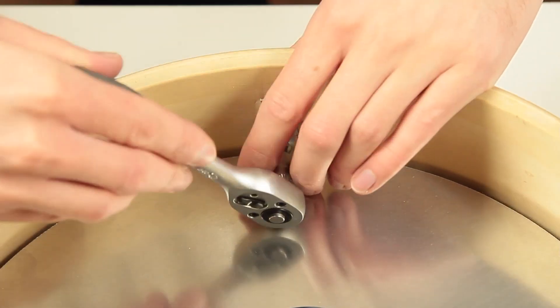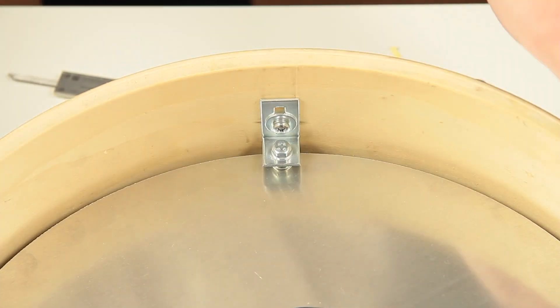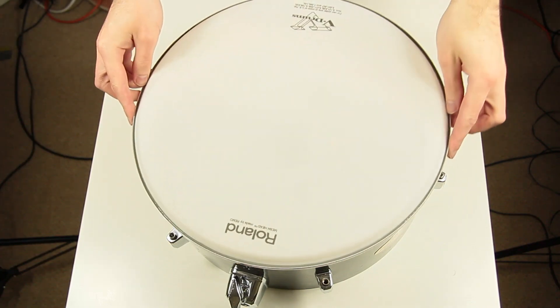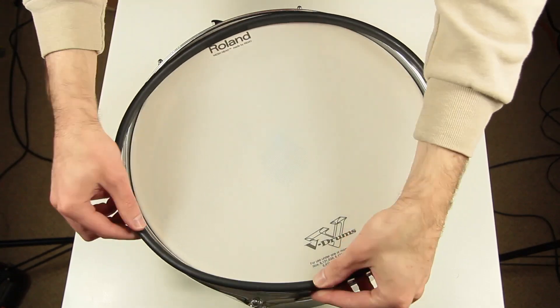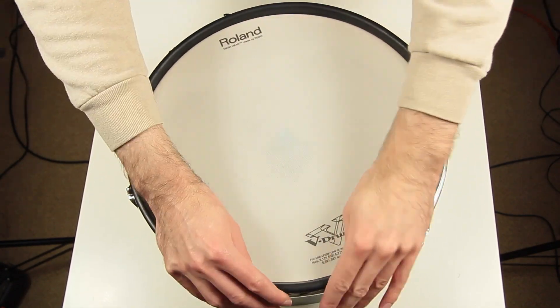We tighten all screws and apply mesh head and rim. The final step is attaching the rim noise eliminator. And that's it!